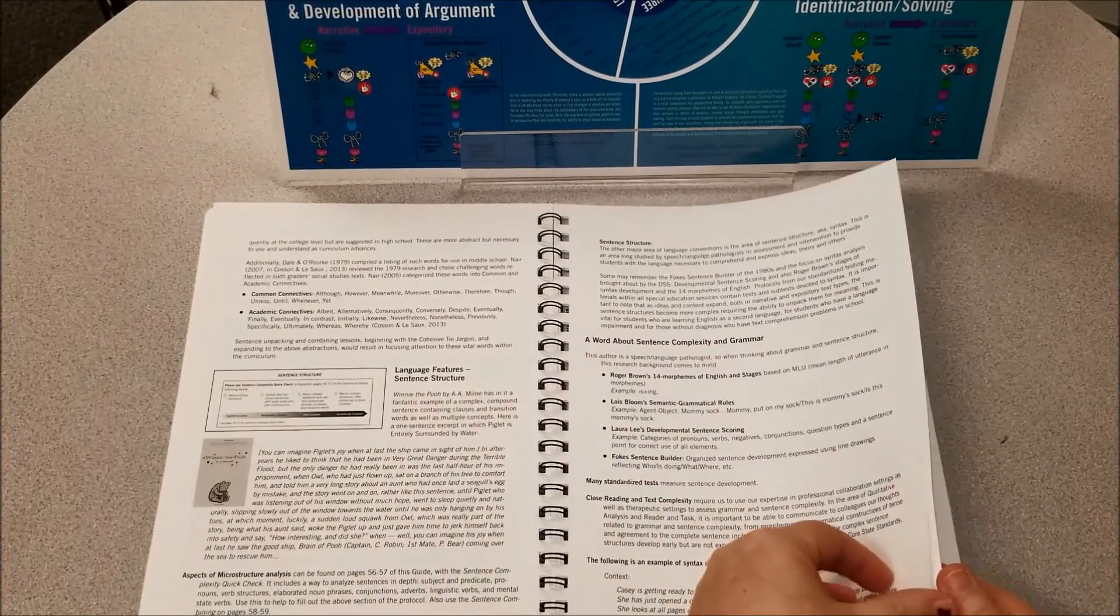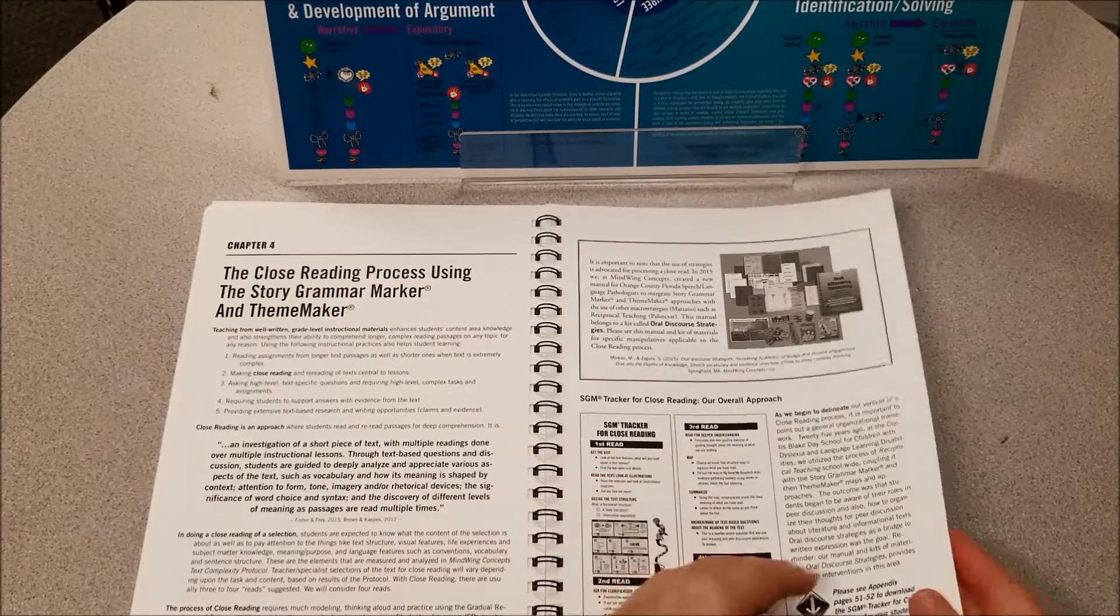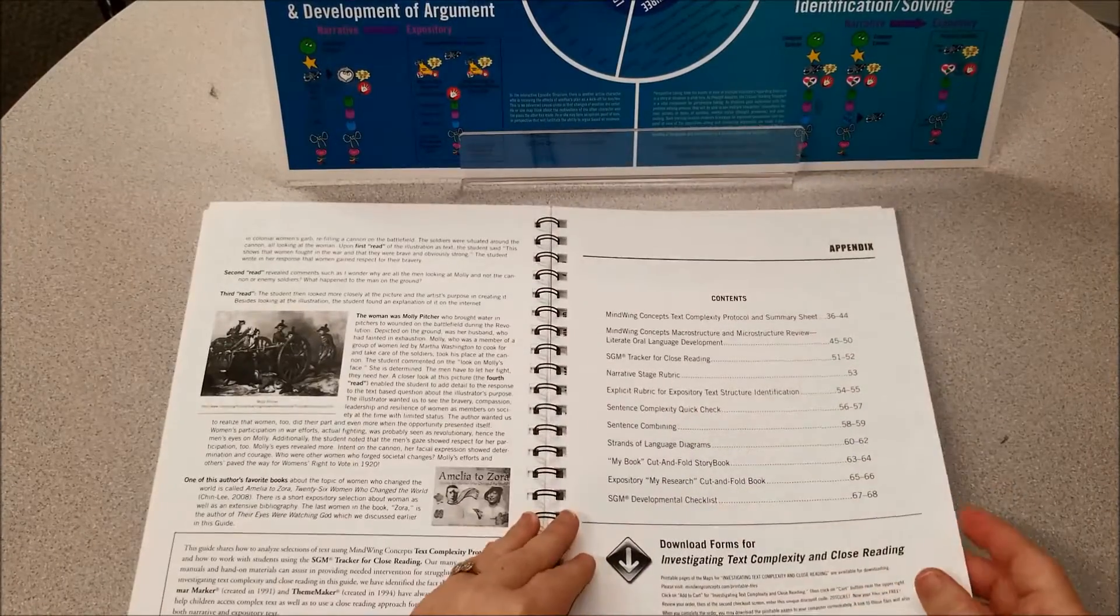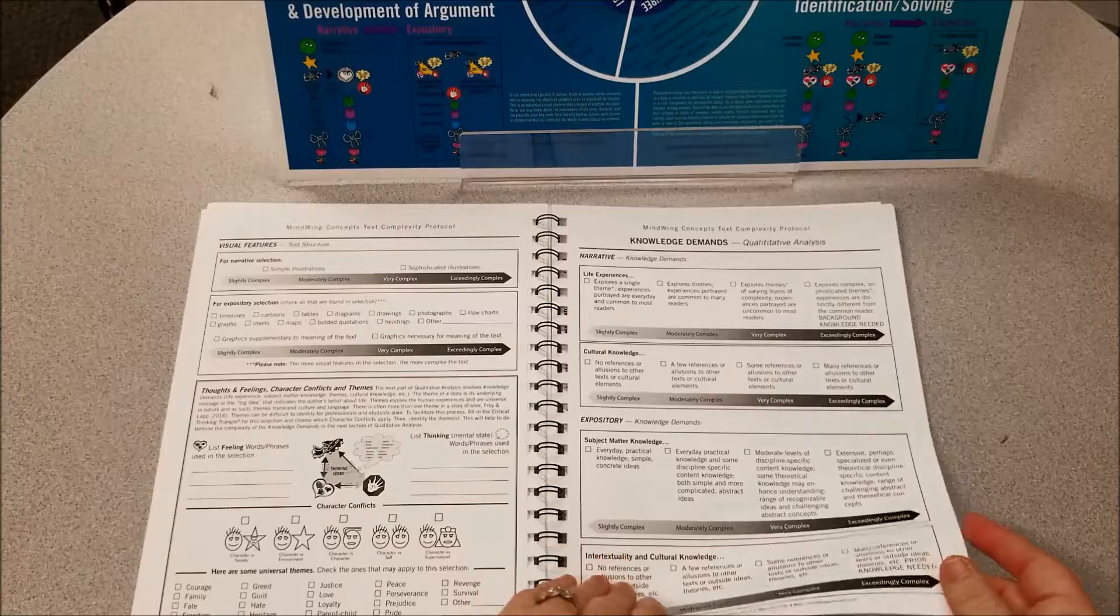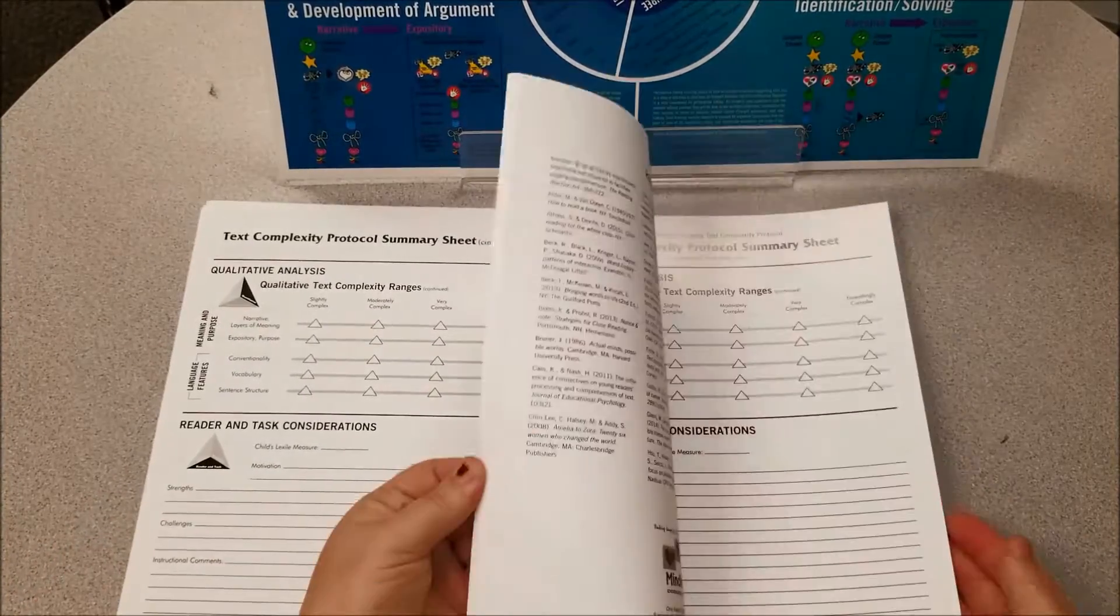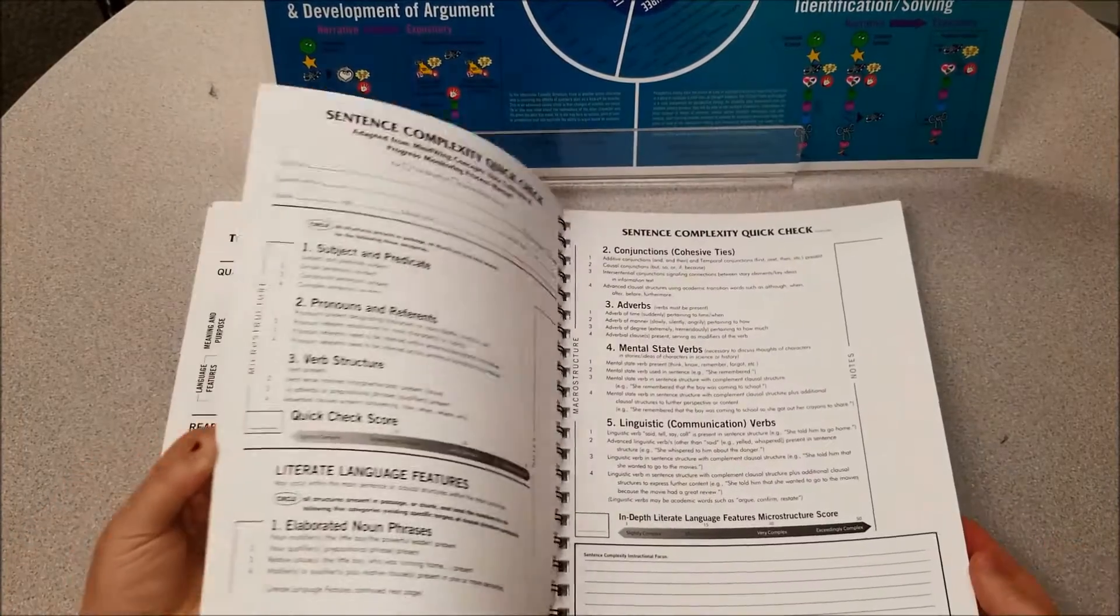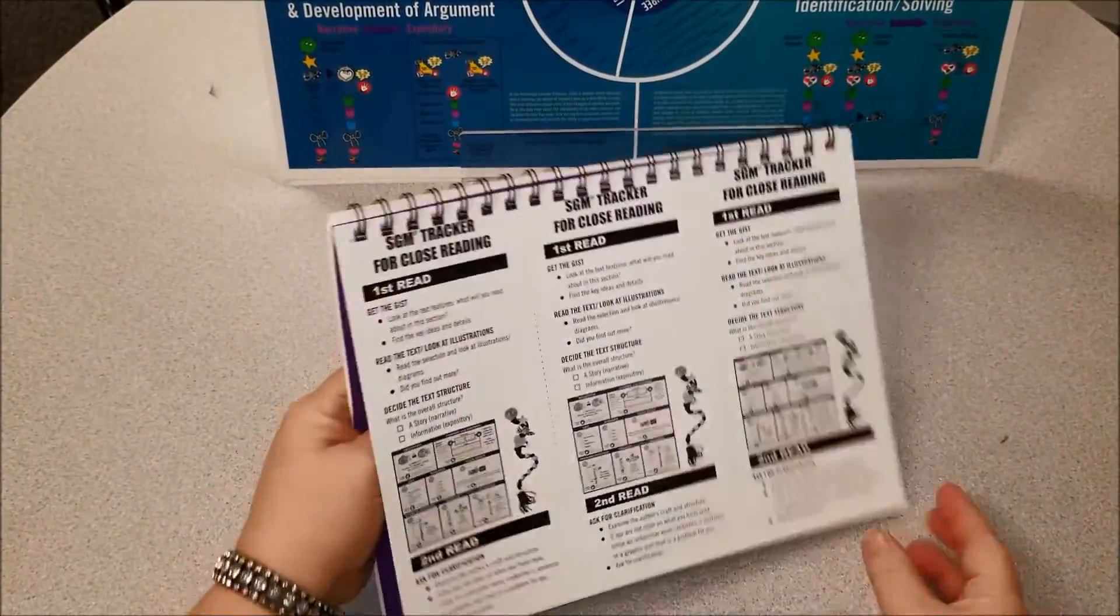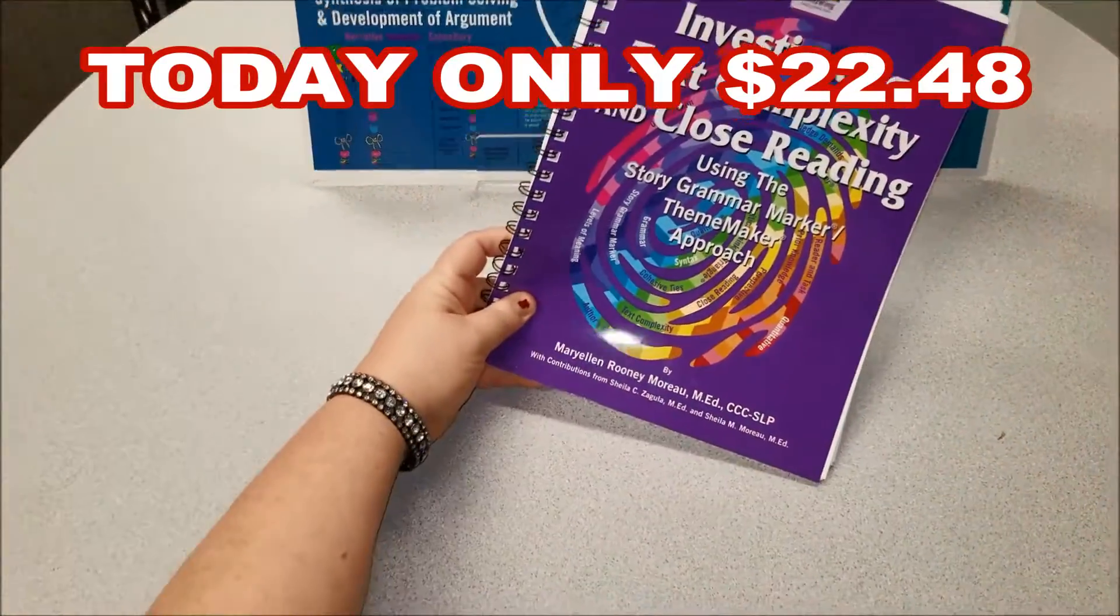Next, we share the close reading process using Story Grammar Marker and Theme Maker with our SGM Tracker for close reading. Finally, our text complexity protocol for in-depth analysis of text complexity, as well as several checklists, maps, charts, even a sentence complexity rubric and SGM Trackers for close reading for students. $22.48, today only.